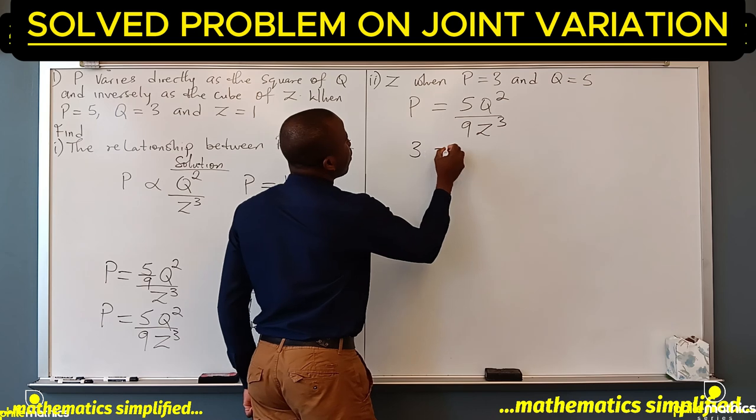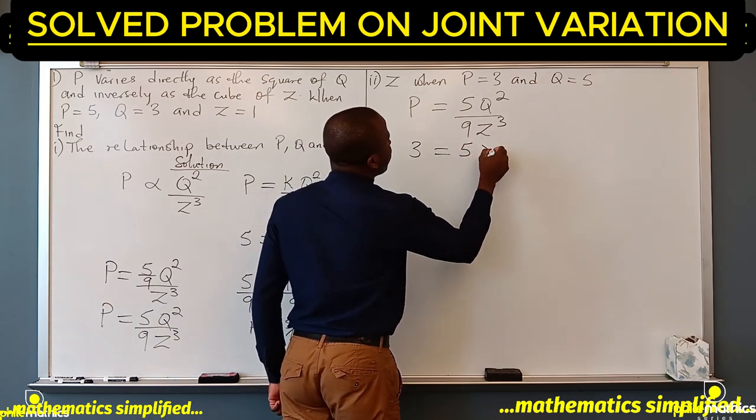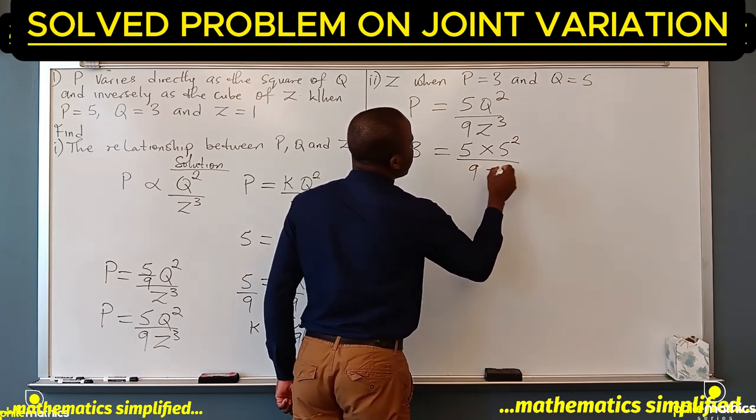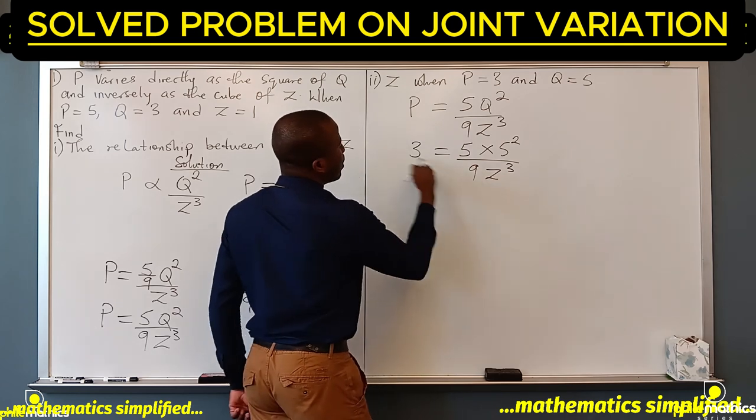Recall that p is 5 q squared over 9 z cubed. So if we put 3 for p, we have 3 equals, and q is 5, 5 times 5 squared over 9 z cubed.